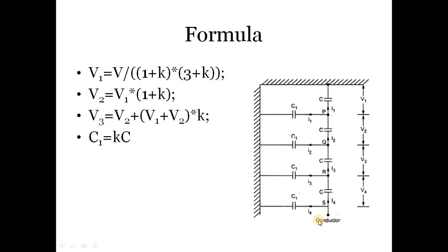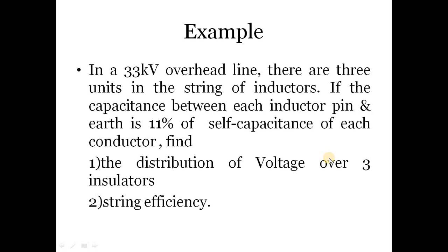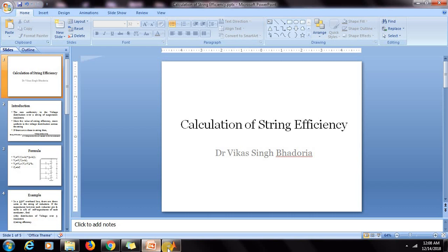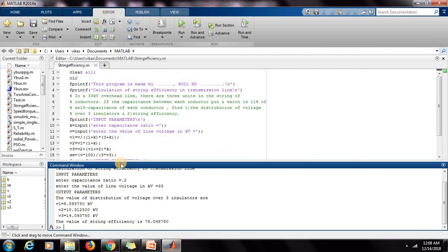In this I have mentioned four disks, but this relation is valid for only three disks. If the disks will be four, then these formulas will change accordingly. But these formulas are valid for only three disks. So for the 33 kV overhead line and this K is 11%, we have to find the distribution of voltage over three insulators and string efficiency. So now let me calculate this in MATLAB.